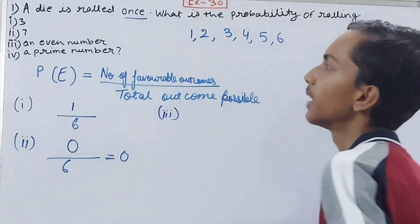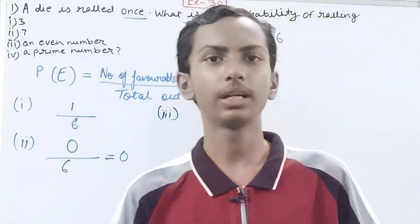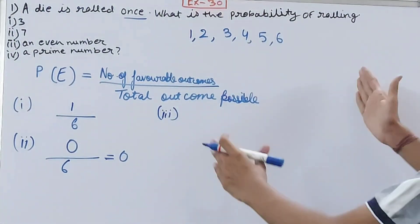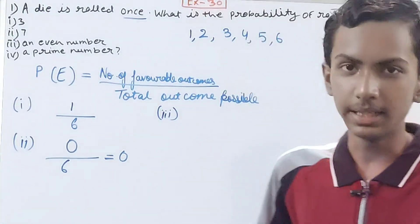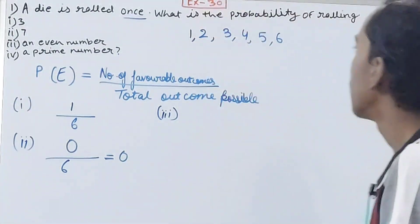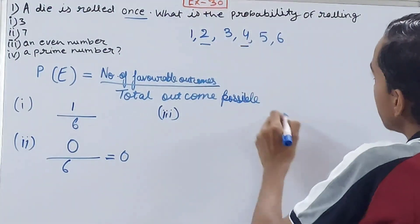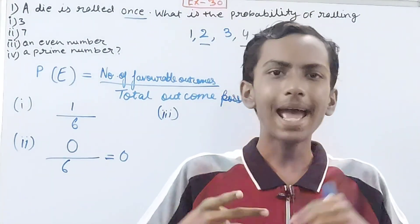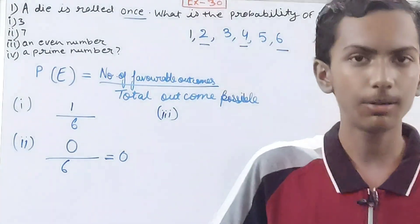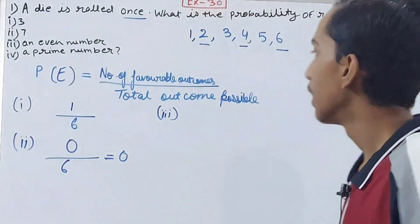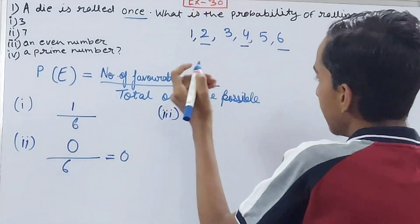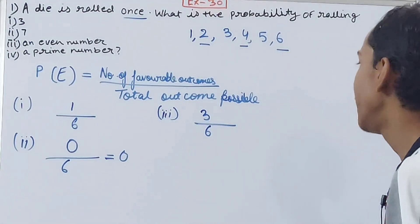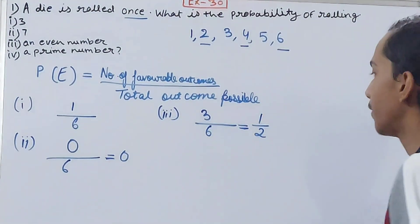Third part: what is the probability of getting an even number? An even number is a number divisible by two. Out of the six numbers on the die, the even numbers are two, four, and six — that's three even numbers. So favorable outcomes = 3, total outcomes = 6. Probability = 3/6 = 1/2. There is a half chance of getting an even number.